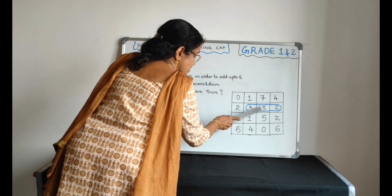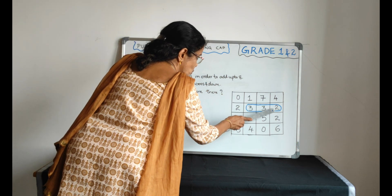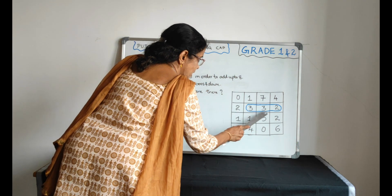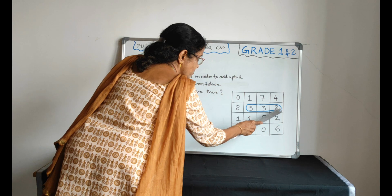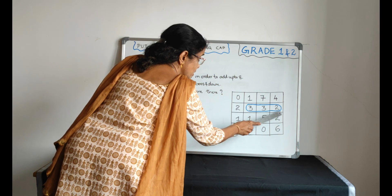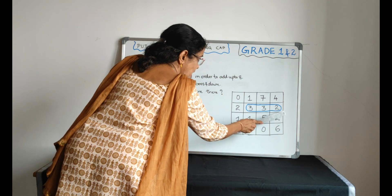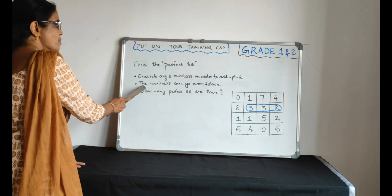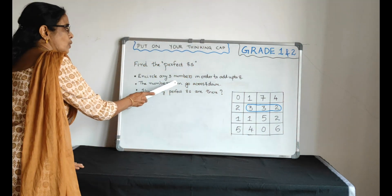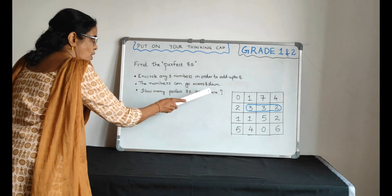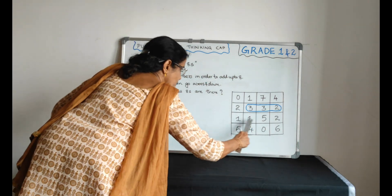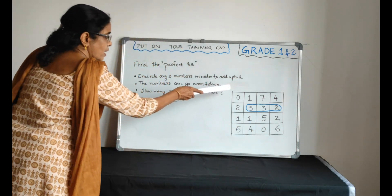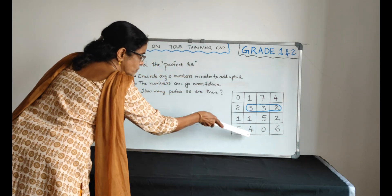3 plus 3 plus 2. So you have to encircle like this and the total is 8. The numbers can go across and down also.